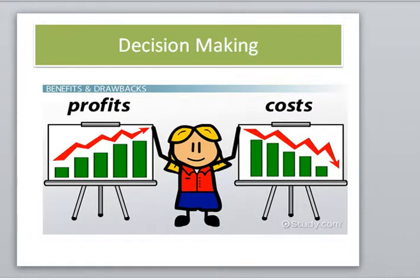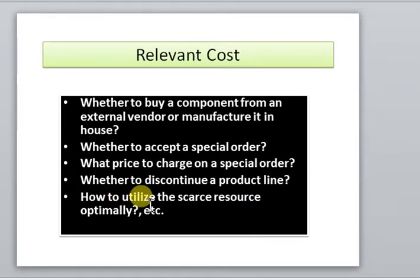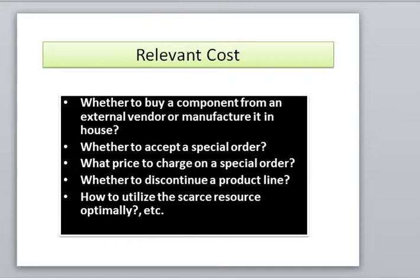The second one is whether to accept a special order. The third one is what price to charge on a special order. The fourth one is whether to discontinue a product line. These 5 factors are important — these 5 factors we need to consider while taking relevant cost, or management, decisions.